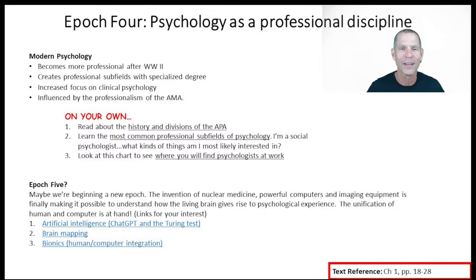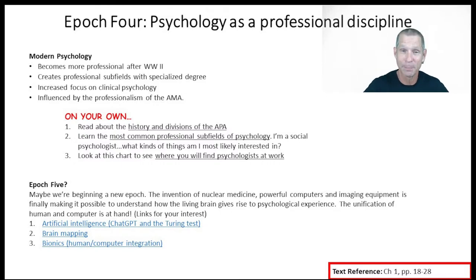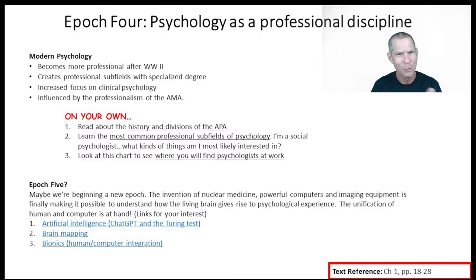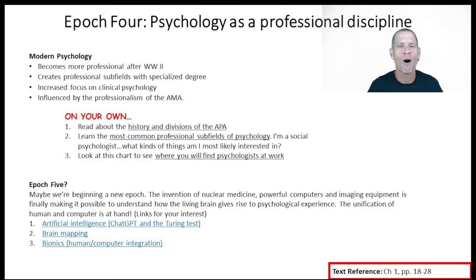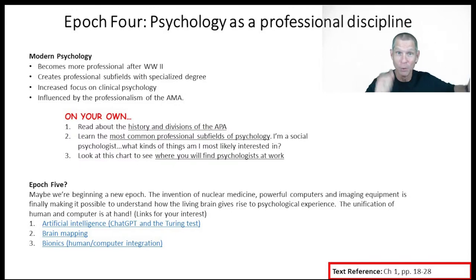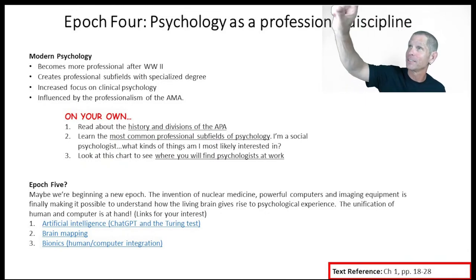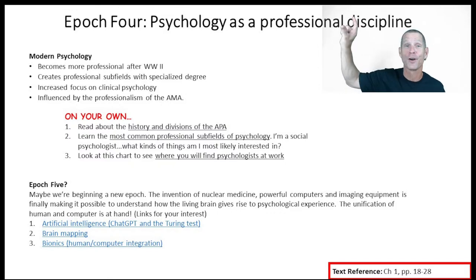If you get trained as a cardiologist, you can't start working on people's feet. If you get trained as a podiatrist, you can't start delivering babies. These professional subfields tell you what you are allowed to do. After 1944, psychology adapted the same exact model that the AMA did. I am a social psychologist — my diploma doesn't say 'doctor of psychology,' it says 'doctor of social psychology.' Every time I meet somebody new and they find out I'm a psychologist, they say 'you could really help my family,' and I think to myself: I'm not that kind of psychologist.